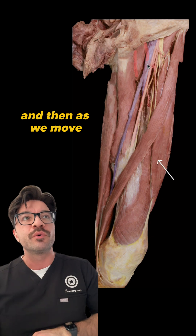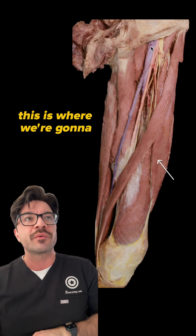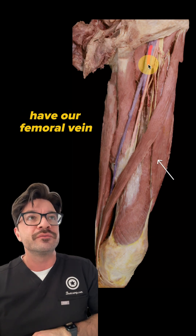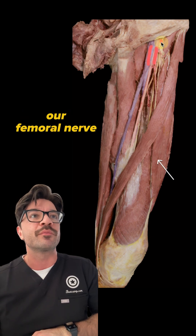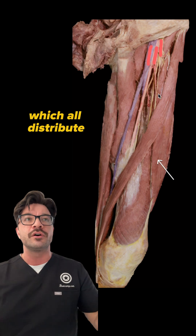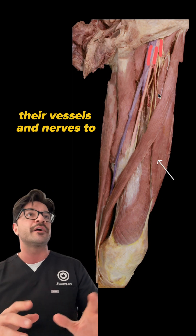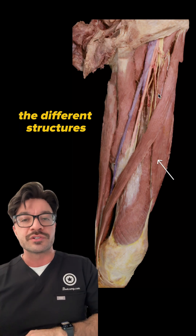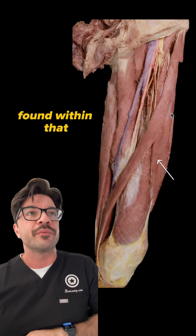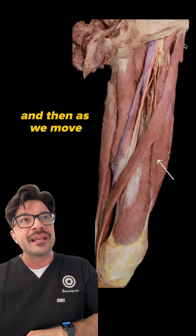And then as we move more laterally, this is where we're going to have our femoral vein, our femoral artery, and our femoral nerve, which all distribute their vessels and nerves to the different structures found within that anterior thigh.